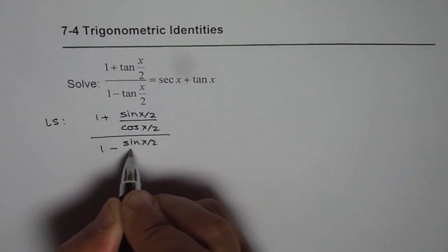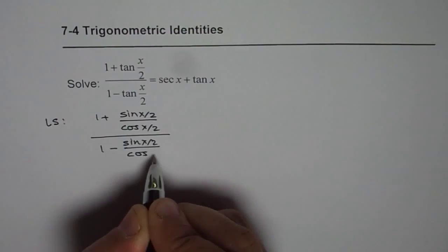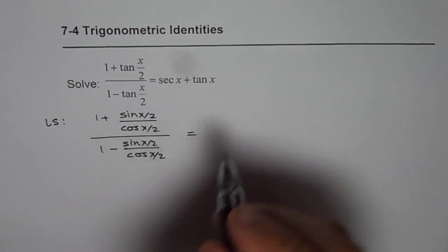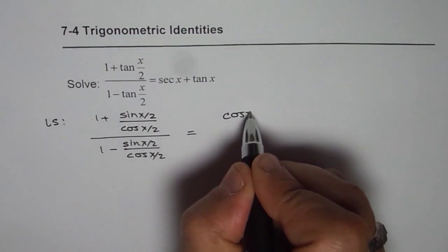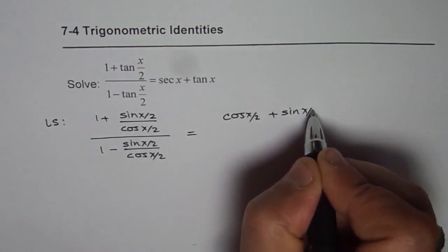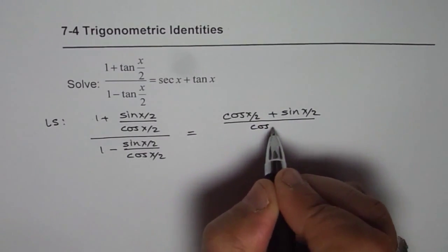Now we'll take common denominator so we get (cos(x/2) + sin(x/2))/cos(x/2) everything divided by (cos(x/2) - sin(x/2))/cos(x/2).